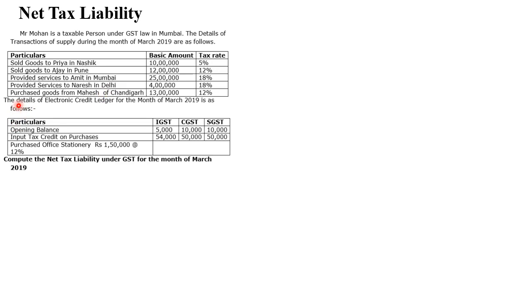They have also given the details of the electronic credit ledger for the month of March 2019, including the opening balance, the balance of ITC on purchases, and another purchase detail — that is, purchase of office stationery of Rs. 1,50,000 at the rate of 12%. The question states: compute the net tax liability under GST for the month of March 2019.